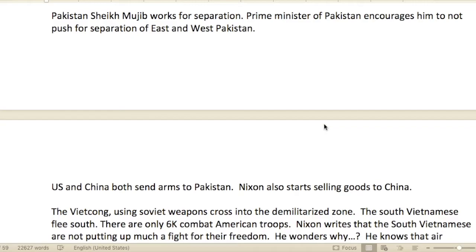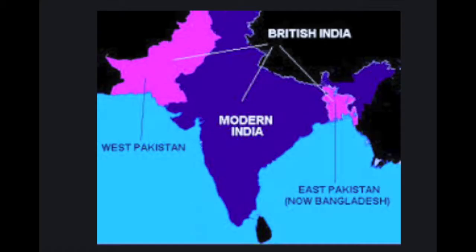In Pakistan, Sheikh Mujib worked for separation. The Prime Minister of Pakistan encouraged them not to push for separation of East and West Pakistan. In the 1970s, West Pakistan was modern-day Pakistan, while East Pakistan was Bangladesh — or what would become Bangladesh.